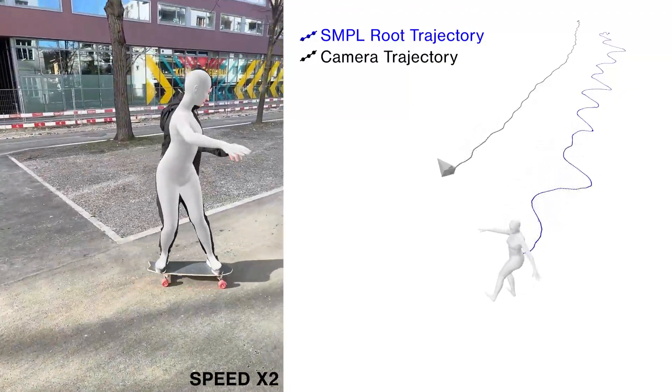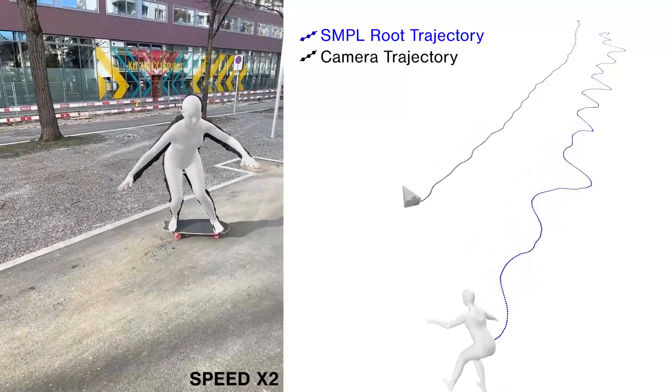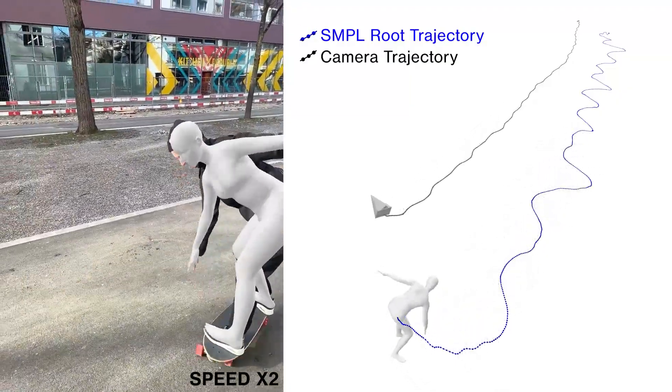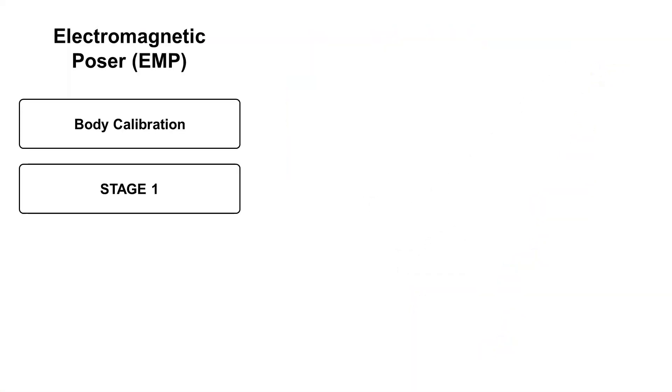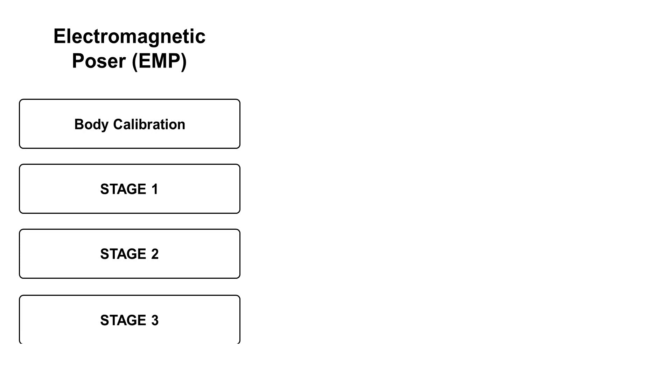To construct EMDB we propose a method called electromagnetic poser, or EMP. EMP is a multi-stage optimization procedure that works as follows.